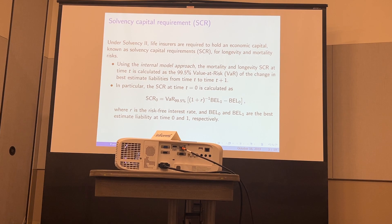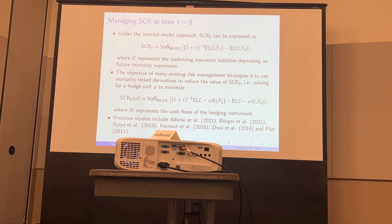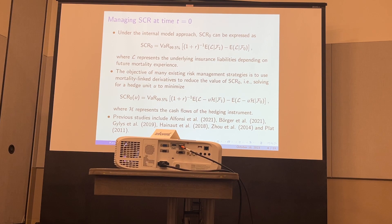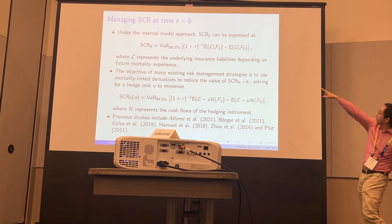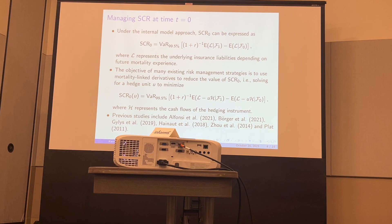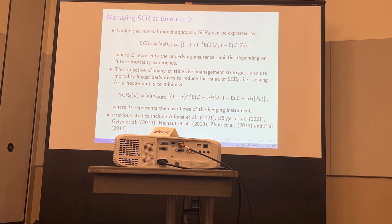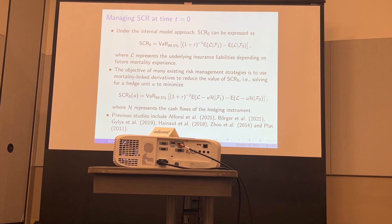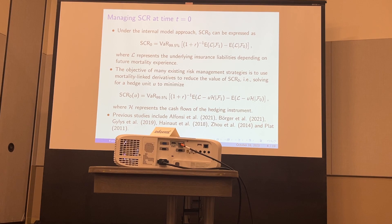To put this in more mathematical terms, under an internal model approach, the life insurer is allowed to use an internal model to estimate how much this liability is worth. The best estimator is the expected value of the liability given information up to the most recent time point. If given at time zero, it's the best estimate of future liability at time zero; if given filtration F1, it's the best estimate at time one tomorrow. We calculate the difference between these two — today's value is set, but tomorrow's is a random variable — and find the 99.5th percentile of this difference to determine the money to set aside.